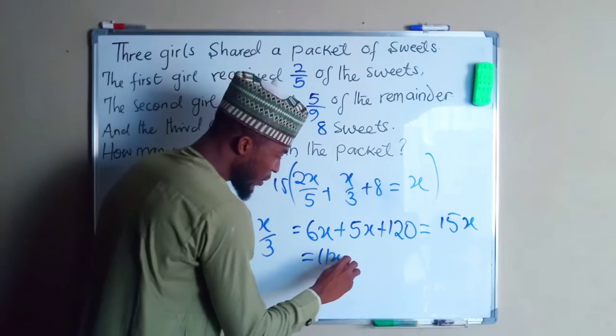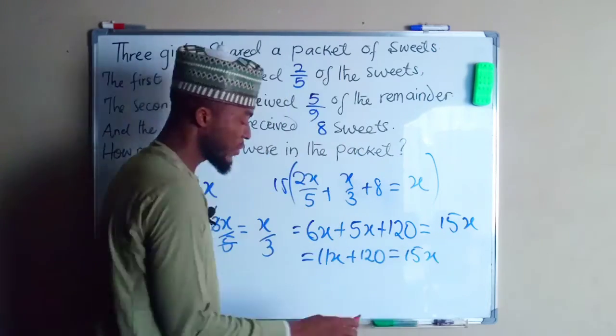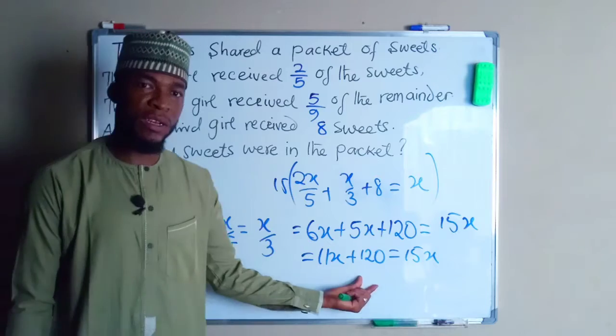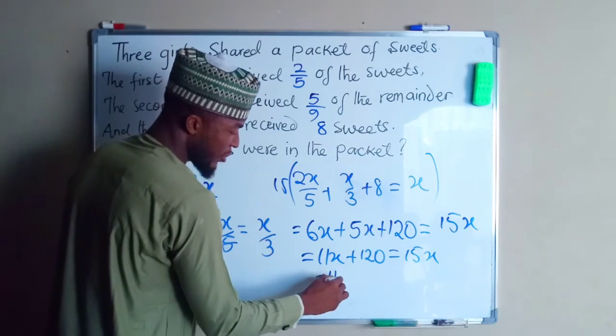If you take 11X to the right-hand side, it becomes negative. So we subtract 11 from both sides. We have 120 on the left-hand side, and we have 4X on the right-hand side.